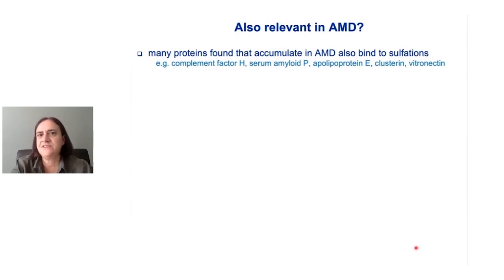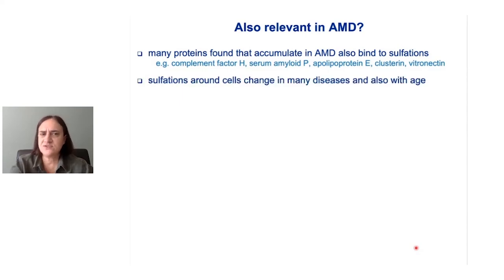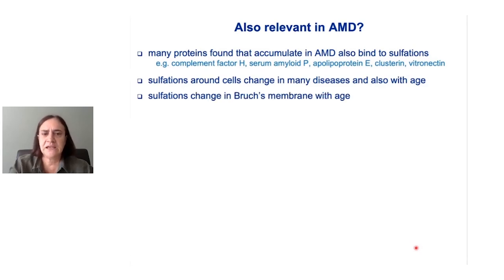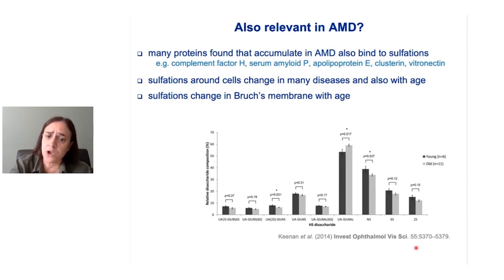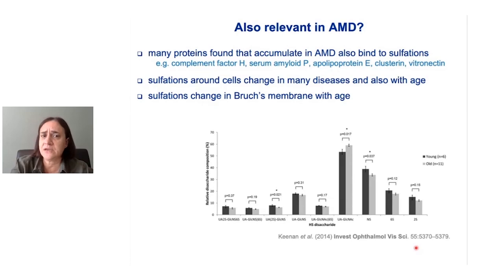We also wonder if this process is relevant in AMD. Many of the proteins that accumulate in AMD also bind to these sulfations around the cells. We also know that these sulfations change in many diseases and with age — for example, sulfations change with age in the heart and in the brain. Kenan and co-workers showed that these sulfations also change in the eye with age. These changes are quite small, but over time we think they could be enough to alter how those sulfations hold on to TIM3 and other proteins. So what we learn in Sorsby macular dystrophy we think might also help us understand more about what happens in age-related macular degeneration.